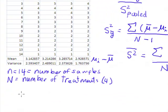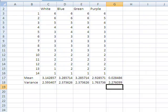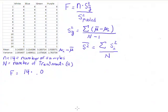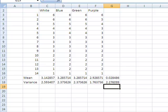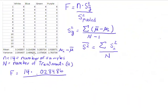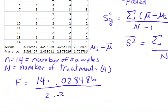So in this example, my F is going to be 14 times .028486 divided by the average of the variances, which is 2.2761.